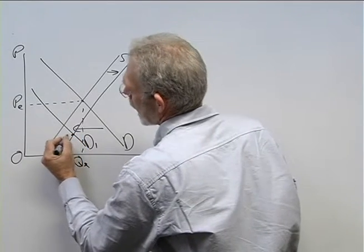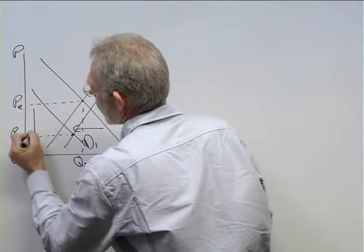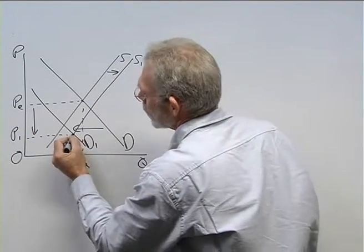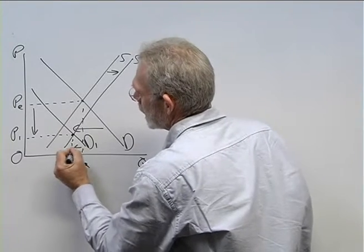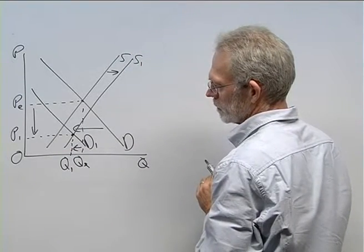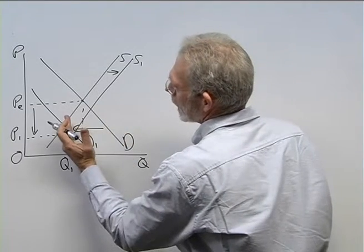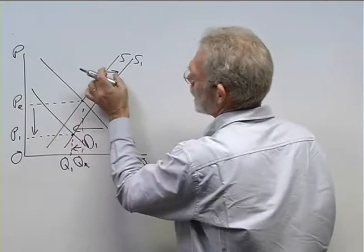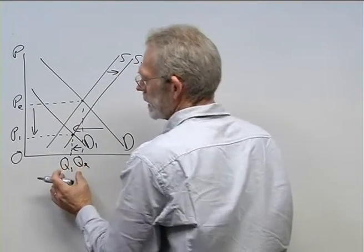As we've said, the price level will decrease. In this case, we find that the equilibrium quantity decreased to Q1. So, when the decrease in demand is bigger than the increase in supply, equilibrium quantity will decrease.